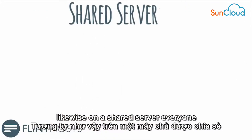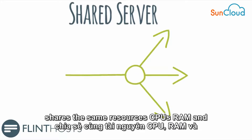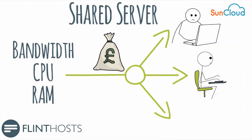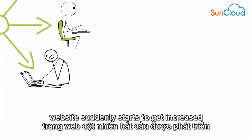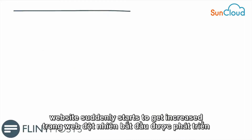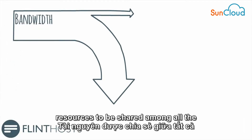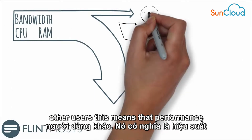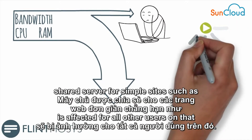Likewise, on a shared server, everyone shares the same resources — CPUs, RAM and so on — which reduces costs considerably. This is normally fine, but if a website suddenly starts to get increased traffic, the result will be less resources to be shared among all the other users. This means that performance is affected for all other users on that shared server.